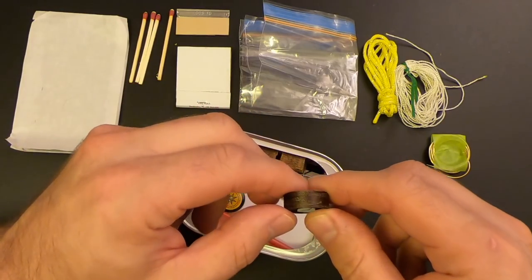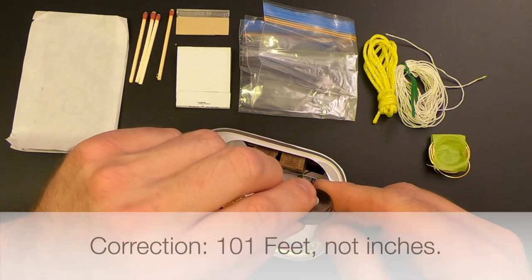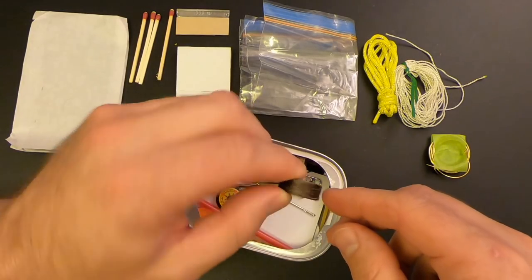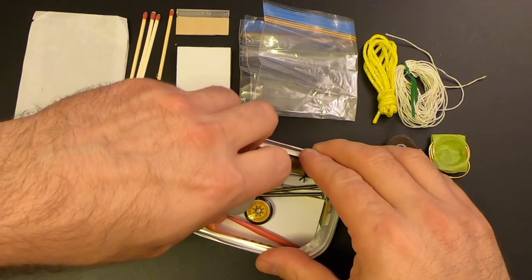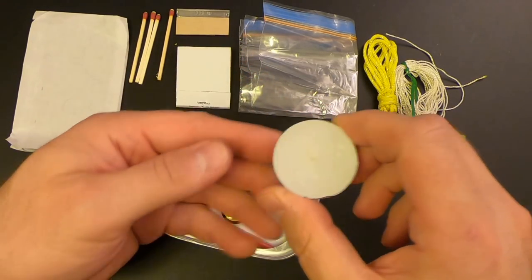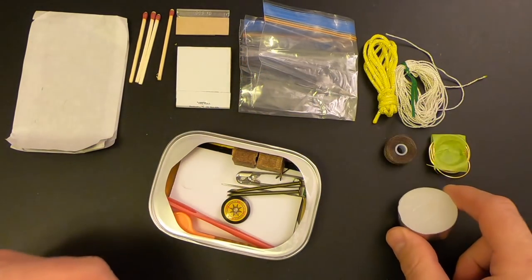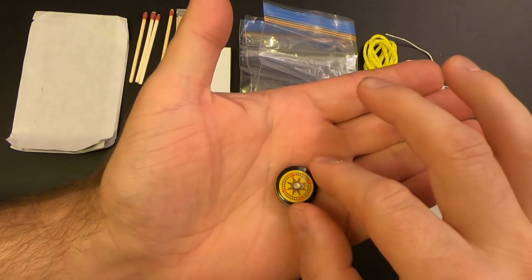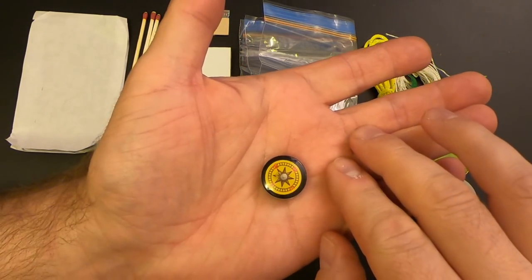Then we've got a spool of thread, which is 101 inches or 31 meters of fishing line slash sewing thread. We've got a tea light candle. Can never go wrong with one of these. We've got a compass. And let's see if it's accurate. And it is.